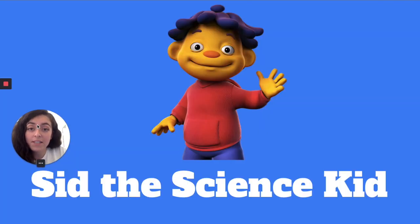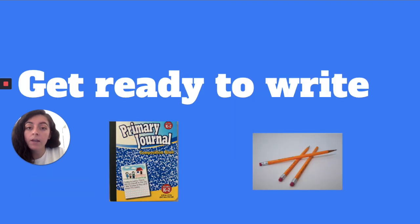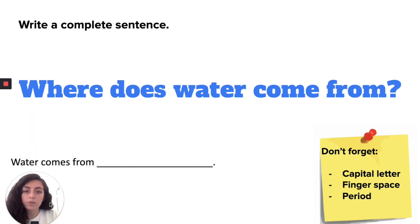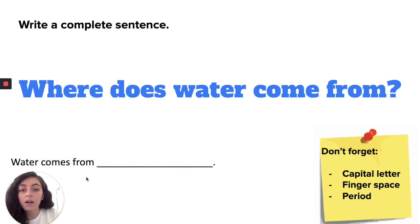We learned a lot from Sid the Science Kid. Do you think you can answer the question: where does water come from? Get your journal and a pencil — pause this video and click play again once you're ready. Your question is: where does water come from? Write a sentence using the sentence stem 'Water comes from blank.' Remember: capital letter at the beginning, spaces between words, and a period at the end. Share your answer with your teacher, then click on the next video to do the experiment with Ms. Ramirez.